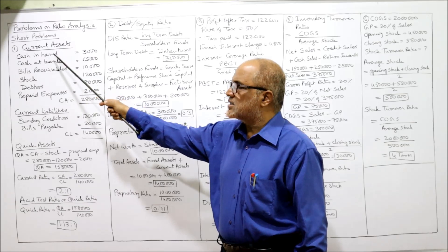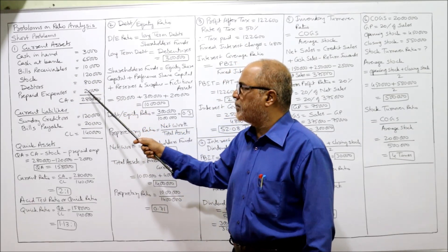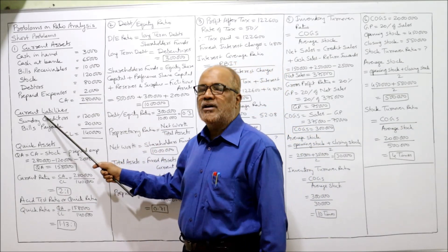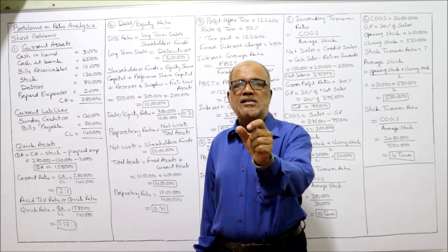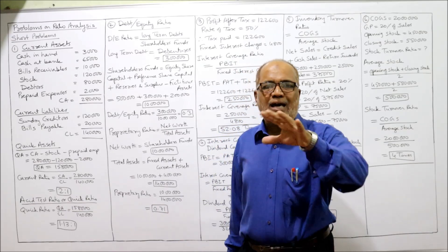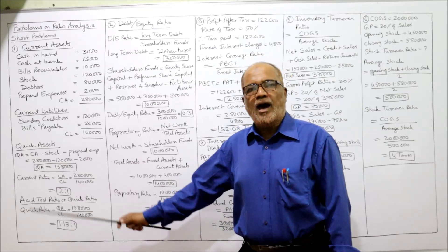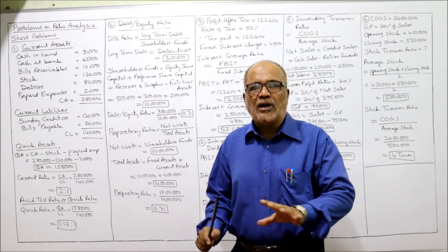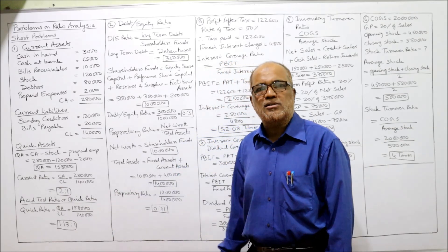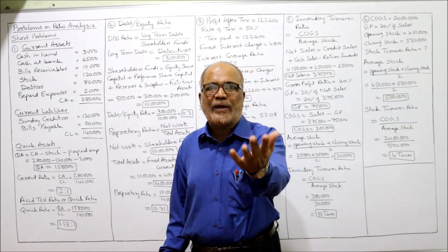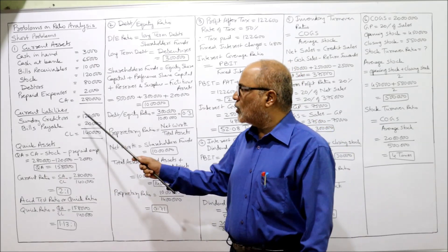We are given current assets and current liabilities and must find current ratio and acid test ratio. Listing the current assets: cash in hand, cash at bank, bills receivable, stock, debtors, prepaid expenses — total current assets 2,80,000. Current liabilities are only two: sundry creditors and bills payable — total 1,40,000. Quick assets equal current assets minus stock minus prepaid expenses.